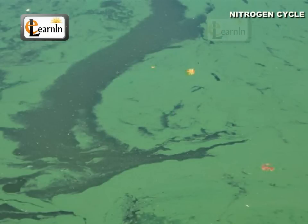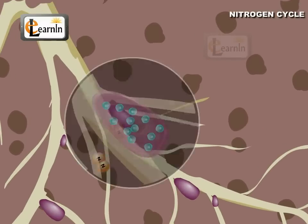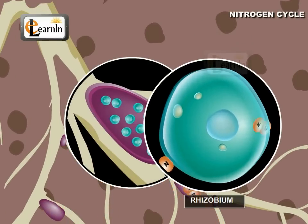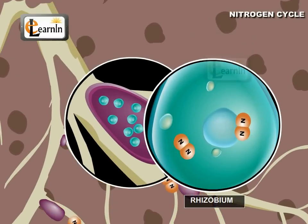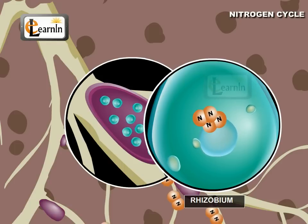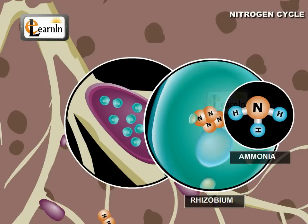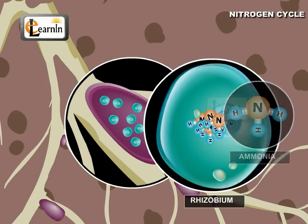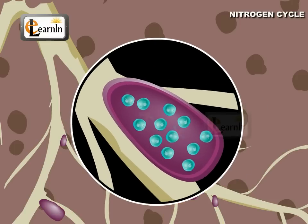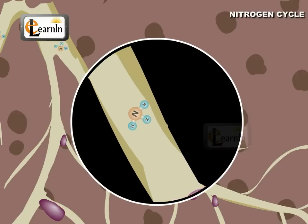Some blue-green algae present in the bacteria can fix the atmospheric nitrogen into their protoplasm. These organisms convert the atmospheric nitrogen into ammonia. After converting this into other organic substances, plants utilize them for their growth.